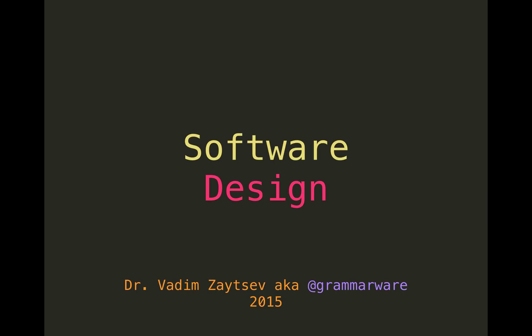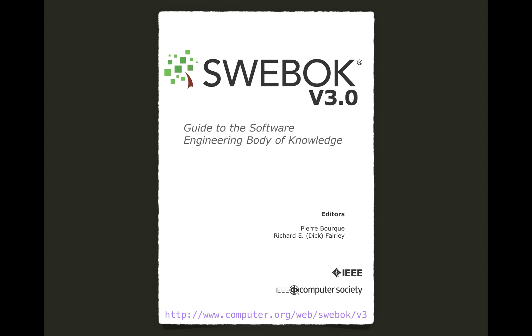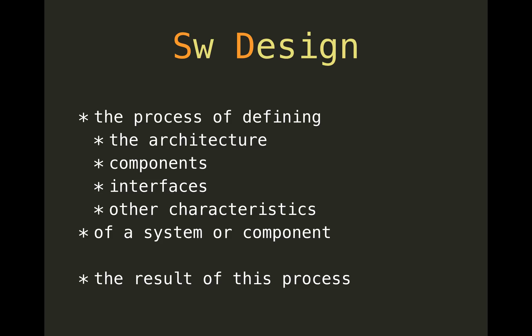Let's talk about software design. That's topic two of the software engineering body of knowledge. Software design can be seen either as a process of defining architecture, components, interfaces, and other aspects of a software system, or as a result of applying this process.